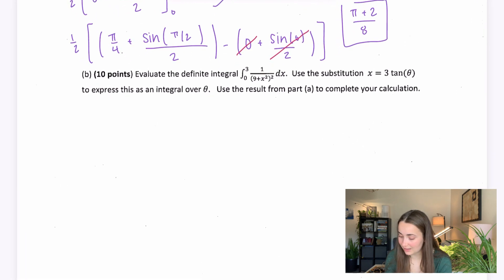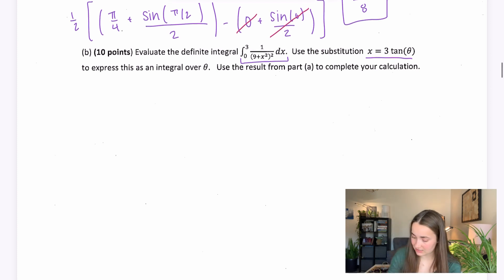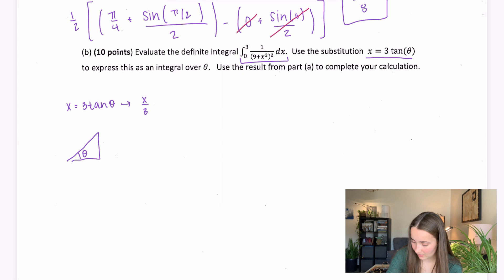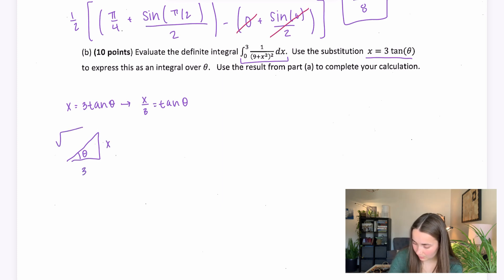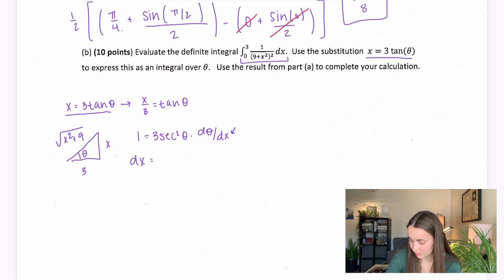We'll use this in part B. Using the substitution x = 3tan(θ): x/3 = tan(θ), and the hypotenuse is √(x²+9). Differentiating both sides, dx = 3sec²(θ) dθ. We also need to change the bounds: x=0 gives θ = arctan(0) = 0, and x=3 gives θ = arctan(1) = π/4.